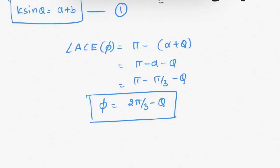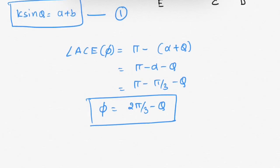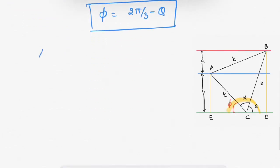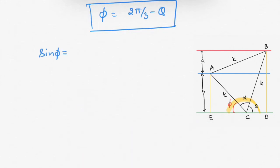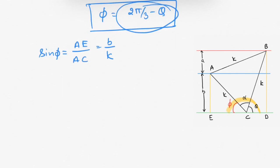So this is angle phi. Now find sin phi in triangle ACE. Sin phi equals perpendicular over hypotenuse; here the perpendicular is AE and the hypotenuse is AC. The length of AE is B and the length of AC is K, and phi is 2 pi by 3 minus theta. So sin(2 pi by 3 minus theta) equals B over K.